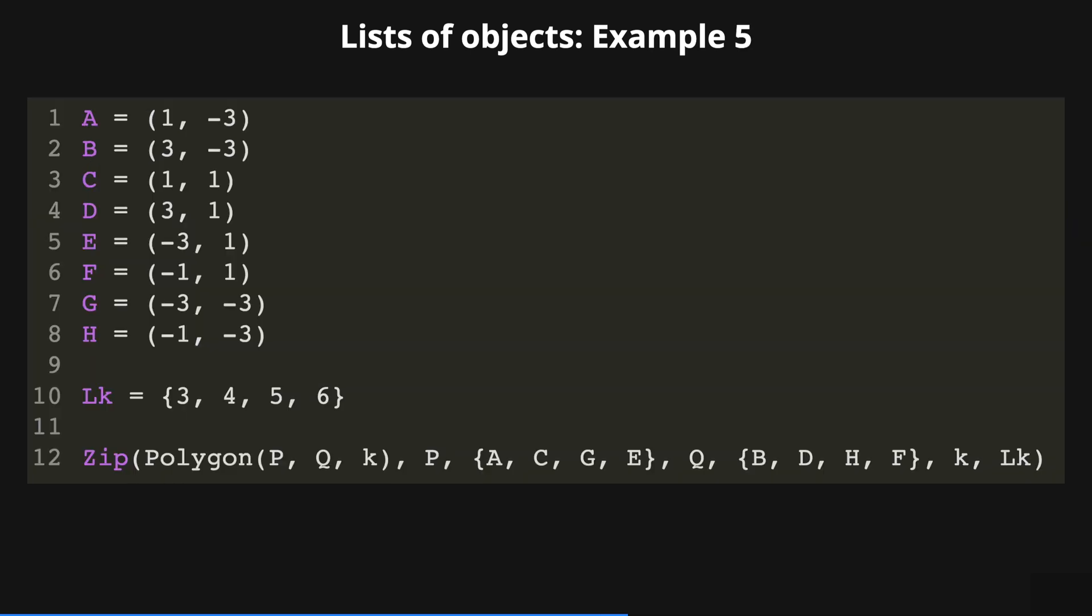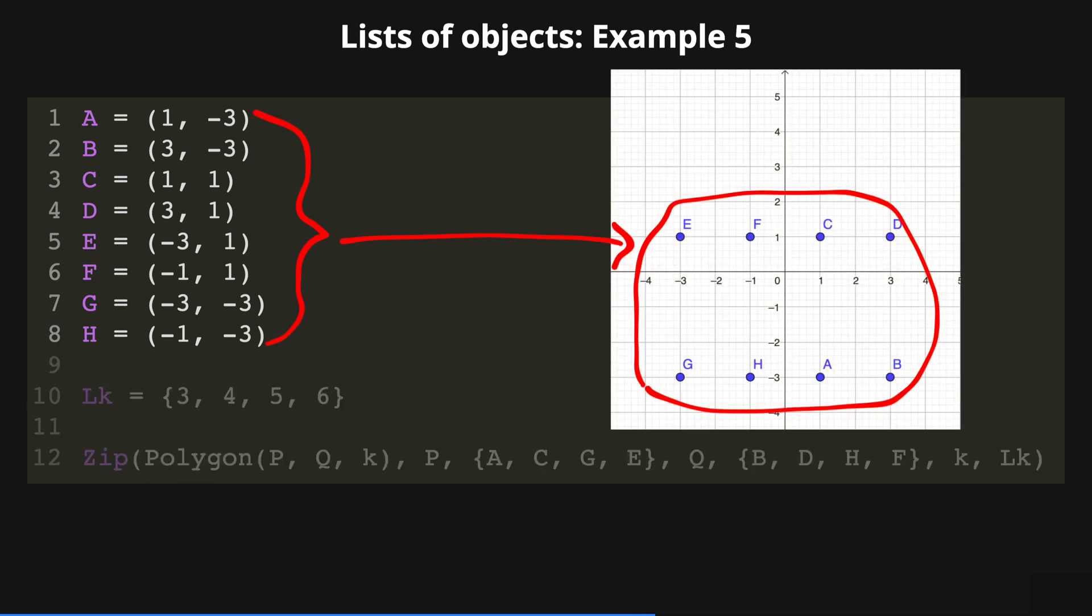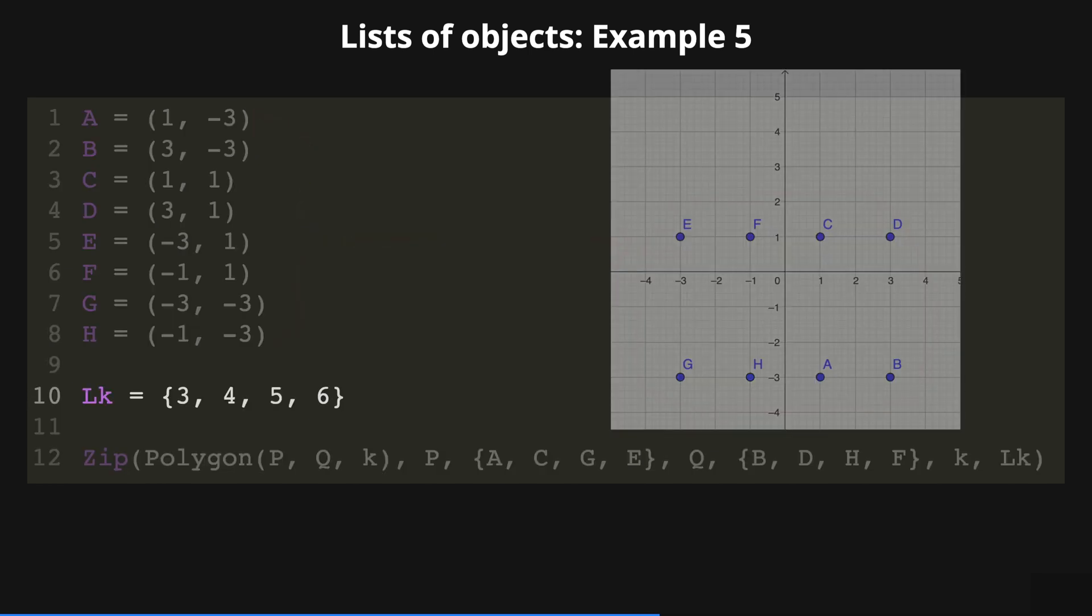Now, with the following example, we are going to plot some regular polygons using three different lists of objects. First, we define the points from A to H. Then, the list Lk as a sequence from 3 to 6 with an increment of 1.